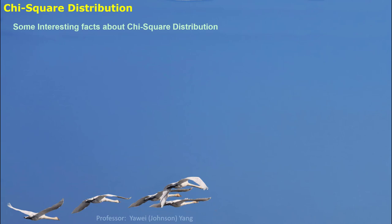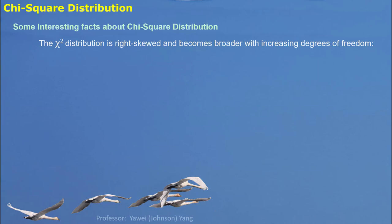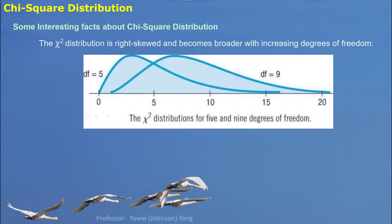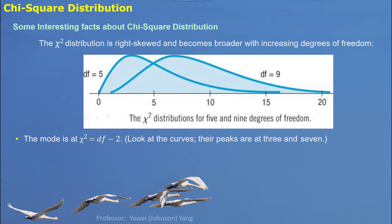Some interesting facts about chi-square distribution: it is right-skewed and becomes broader when increasing degrees of freedom. We have two example curves with degrees of freedom 5 and 9. The mode for a chi-square random variable is degrees of freedom minus 2. From the curve, the mode is the value with the highest frequency. For degrees of freedom 5, we get 5 minus 2 equals 3, which is about the peak of that curve. For degrees of freedom 9, the mode would be 7, also about the peak.